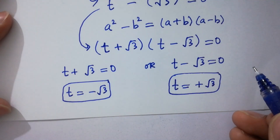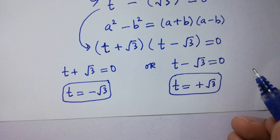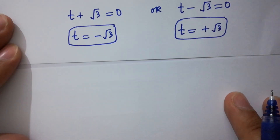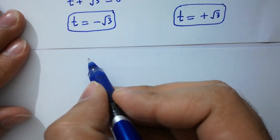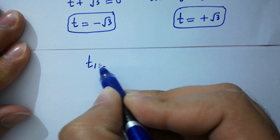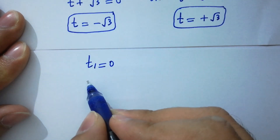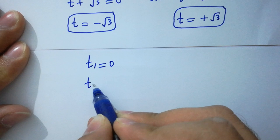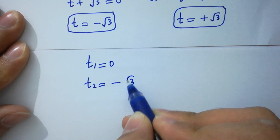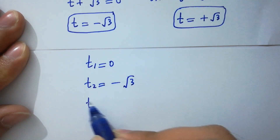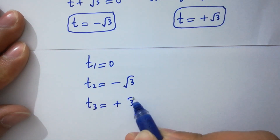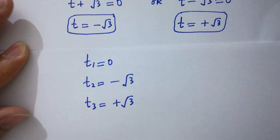So we have three solutions: t1 equals 0, t2 equals minus square root of 3, and t3 equals plus square root of 3.